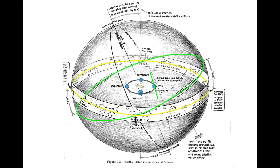If the Earth's axis were not tilted, the celestial equator would actually be the same as the ecliptic. But because the Earth's axis is tilted, we have two distinct lines on the sky. The reason we experience the seasons is because of this tilt, and that's what I want to talk about today. So let's jump into that.